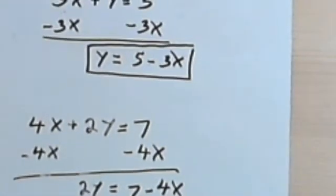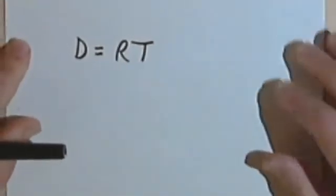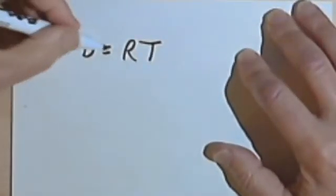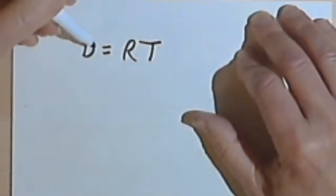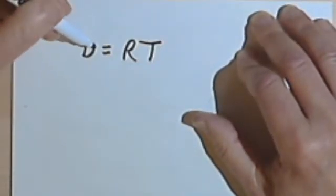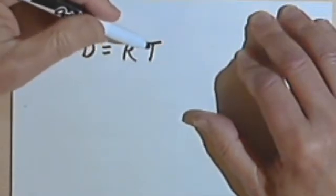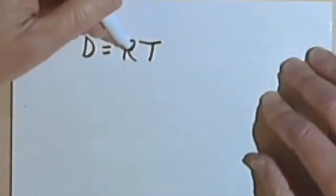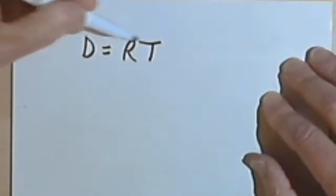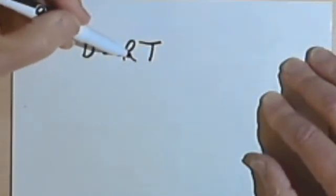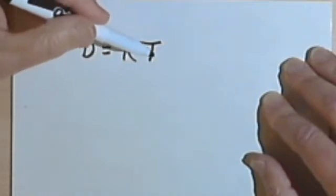Here's a couple more. So this is d equals rt. You might recognize this as a formula for figuring out the distance. Distance equals rate times time. And you might have to figure out the rate. In other words, you might want to solve this equation for r in terms of the d and the t.